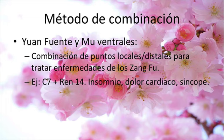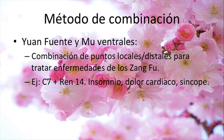Otro método de combinación es combinar el Yuan Fuente con los mu ventrales. El principio es usar función distal a local para tratar enfermedades de los Zanfu: el principio de raíz-rama. Por ejemplo, Corazón 7 y Ren Mai 14. Corazón 7 es el punto Yuan Fuente, y el punto mu ventral de corazón es Ren Mai 14. ¿Para qué sirve esa combinación? Para tratar alteraciones del corazón. El corazón tiene que ver con el Shen, y cuando hay alteraciones del Shen tenemos insomnio, dolores o síncopes de origen cardíaco.